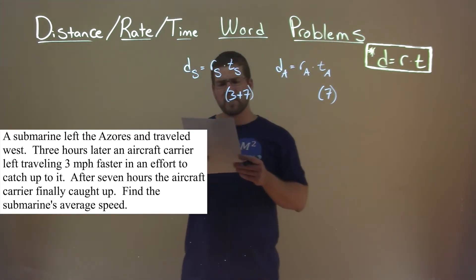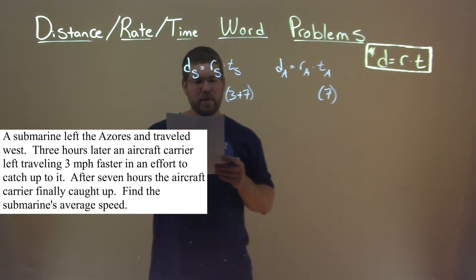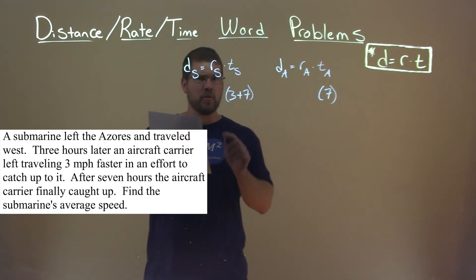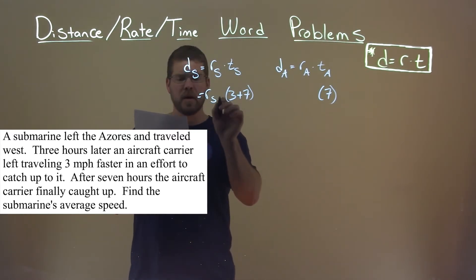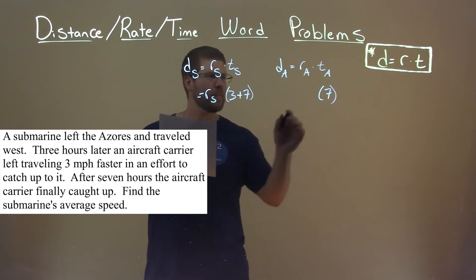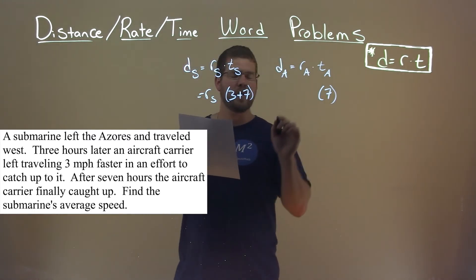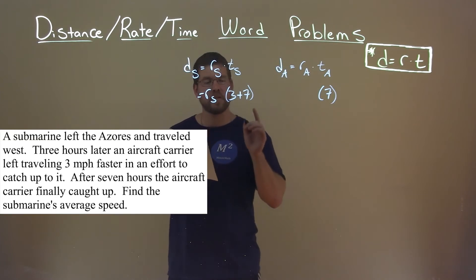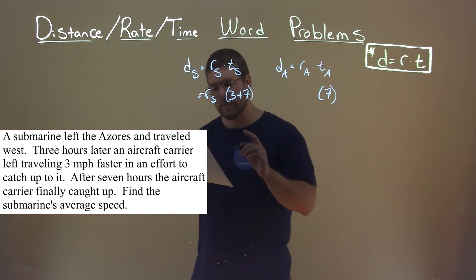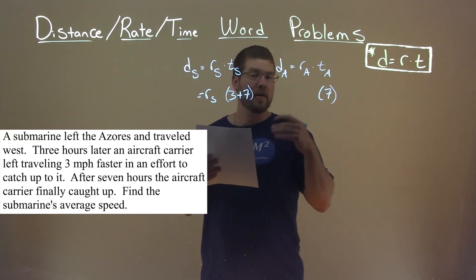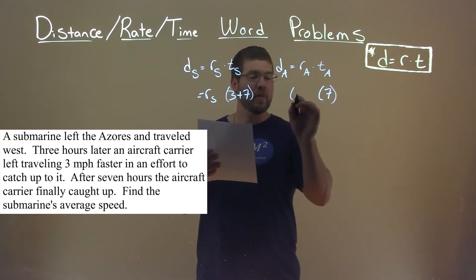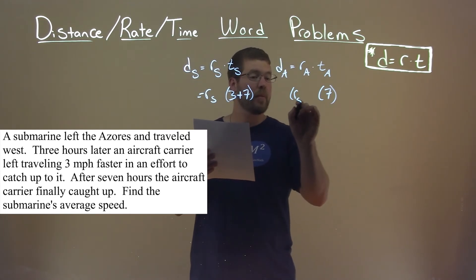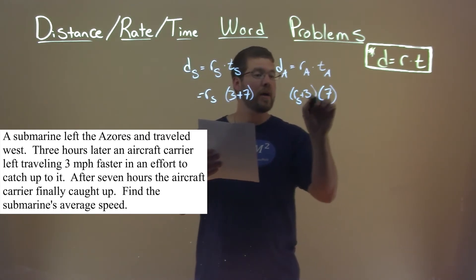They don't tell us what the rate of the submarine is. But they tell us the aircraft carrier was traveling three miles per hour faster than the submarine. So the aircraft carrier's rate can be written in terms of the submarine: rate of the submarine plus three miles per hour.